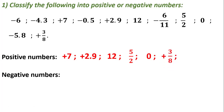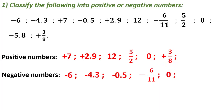The rest are negative numbers since they are preceded by a minus: minus 6, minus 4.3, minus 0.5, minus 6 over 11, zero is considered also negative, and minus 5.8. This is how we classify signed numbers into positive or negative.